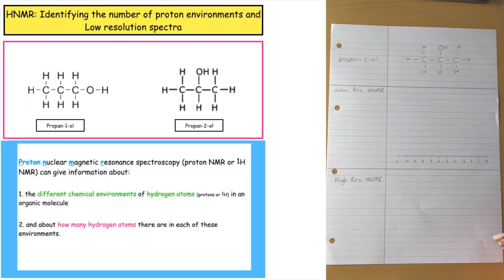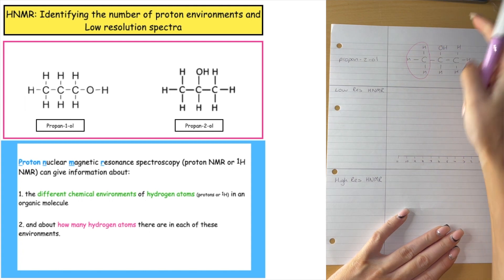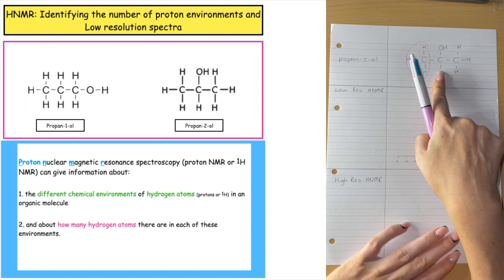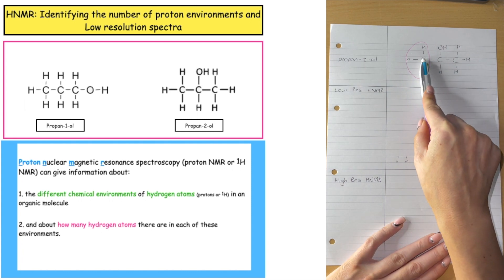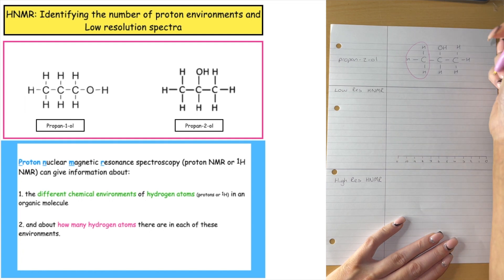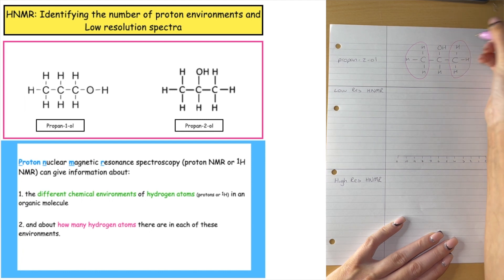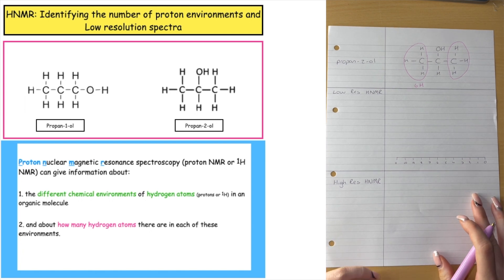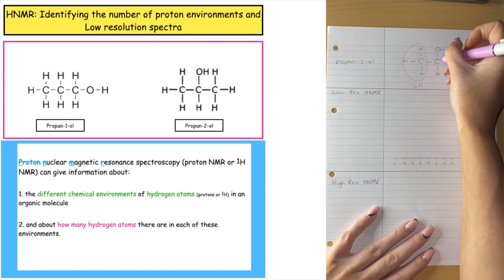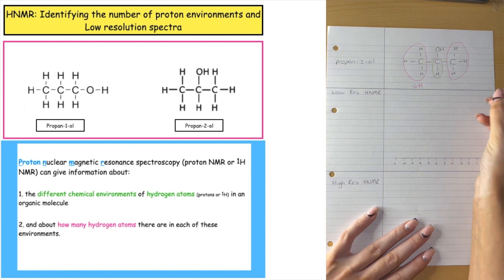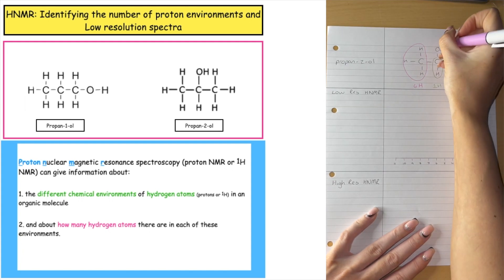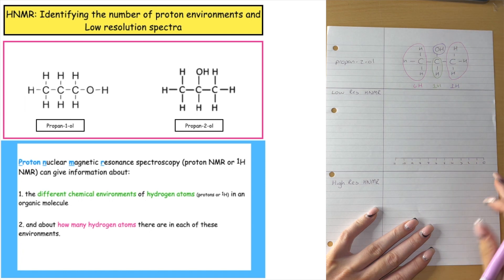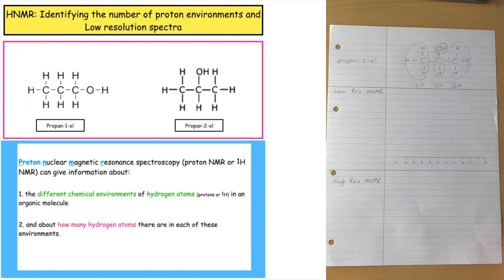Now let's look at propane-2-ol. We have a CH3 bonded to a CH, and what we can see about this molecule is that it's symmetrical. A house with three rooms will always be bonded to the same neighbour in the middle, so both CH3 groups are classed as one proton environment due to the symmetry — giving a combined total of six hydrogen atoms. The CH in the middle is a second proton environment with one hydrogen, and the OH group is the third. So there are three proton environments and therefore three lines on the low-resolution HNMR spectra.